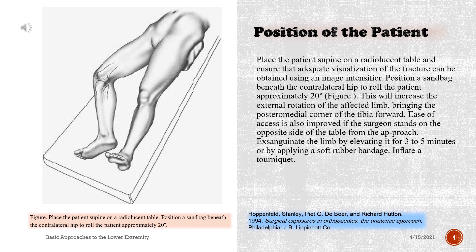Place the patient supine on a radiolucent table and ensure that adequate visualization of the fracture can be obtained using an image intensifier. Position a sandbag beneath the contralateral hip to roll the patient approximately 20 degrees. This will increase the external rotation of the affected limb, bringing the postero-medial corner of the tibia forward. Ease of access is also improved if the surgeon stands on the opposite side of the table from the approach.